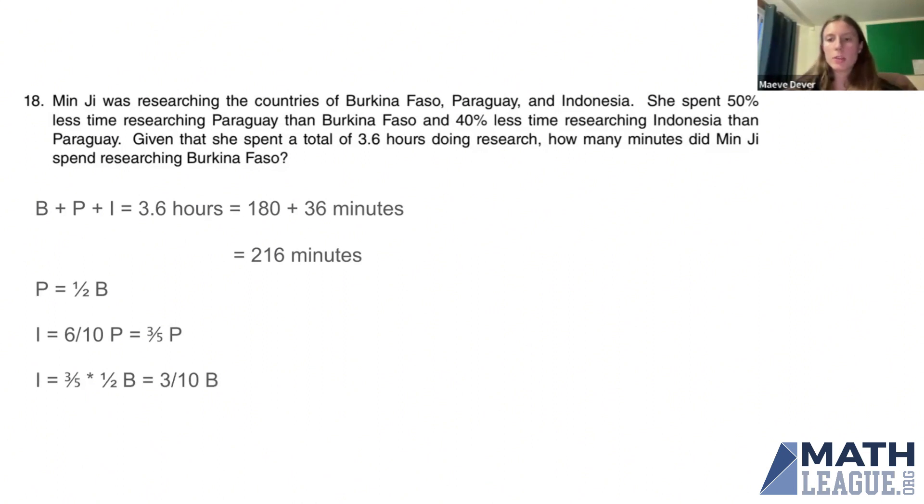And actually, what we want to know is how many minutes did Minji spend researching Burkina Faso? And now we've got our other two variables in terms of B, which means we can get rid of them and have an equation with just B's in it, which is good, because B is what we want.